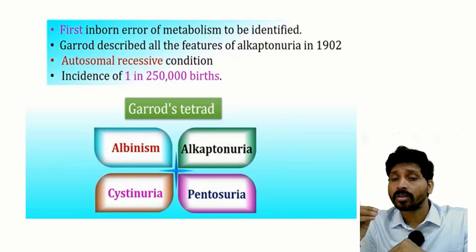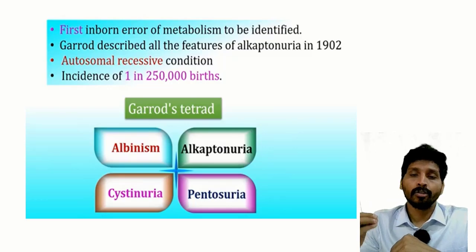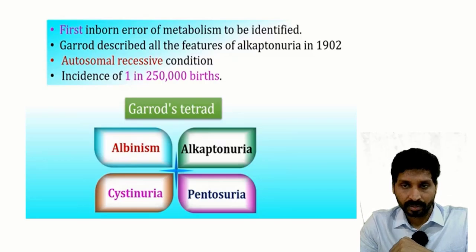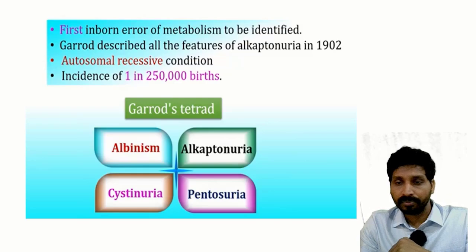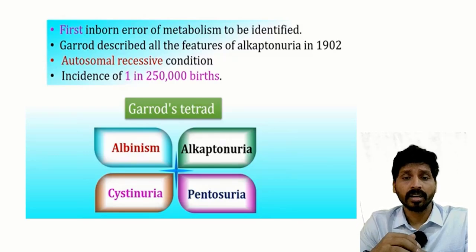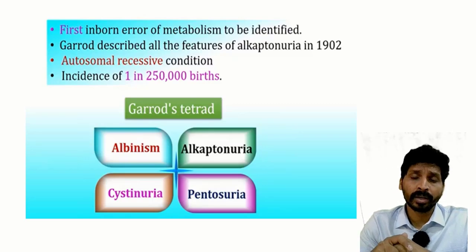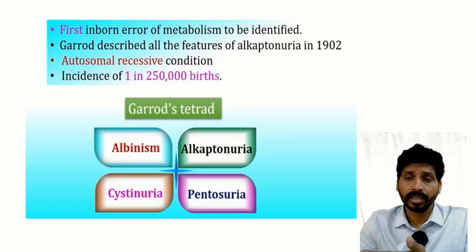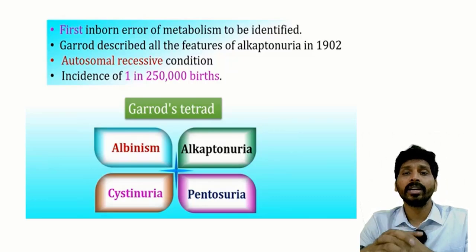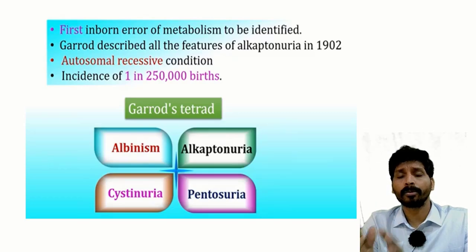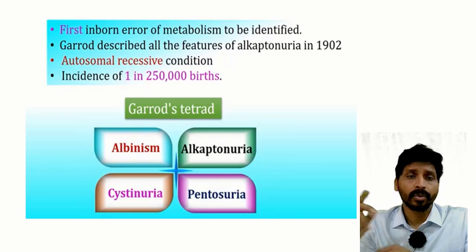Alkaptonuria is caused by absence of homogentisic acid oxidase, which is crucial to convert homogentisic acid to maleylacetoacetate and acetoacetate — the proper degradation of tyrosine. Cystinuria is due to a defect in the kidney transporter for reabsorption of cysteine, causing cysteine excretion in urine and kidney or ureteral stones. Pentosuria is due to deficiency of xylitol dehydrogenase — only xylitol is not processed and is excreted in urine at high levels.